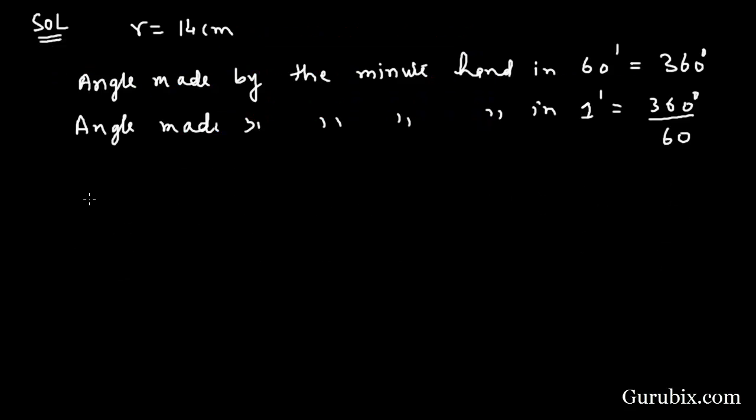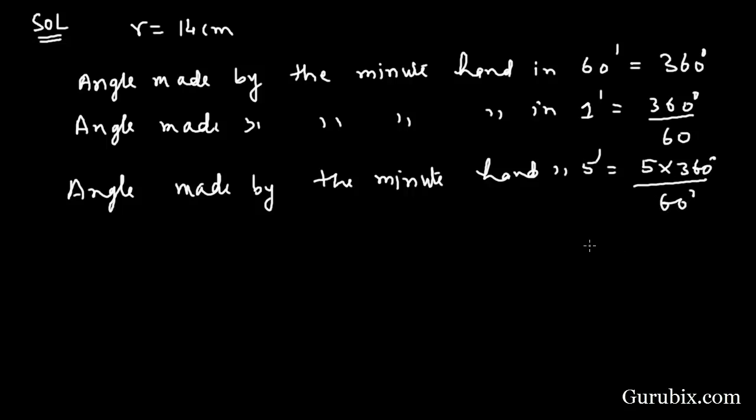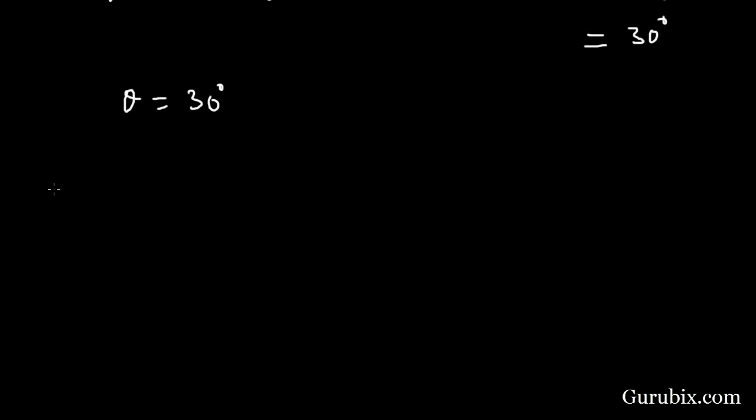This means angle made by the minute hand in five minutes will be five times 360 degrees over 60, which equals 30 degrees. Therefore, the angle of the sector is 30 degrees.